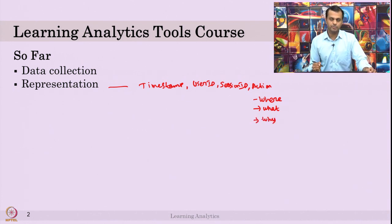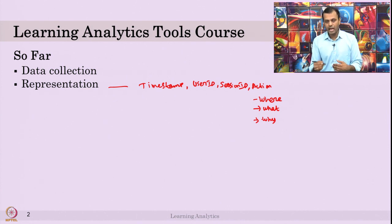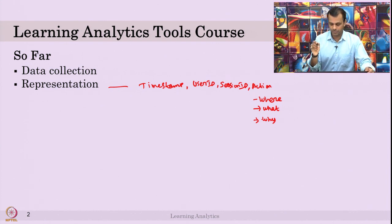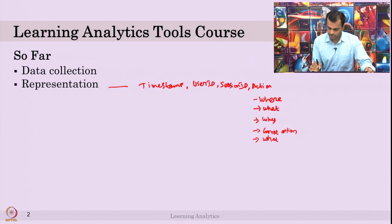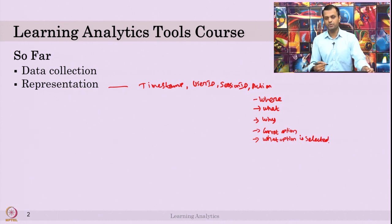Also, if they are answering questions in a quiz or online assignments, think about what option they selected and what was the correct option. So if the action is answering a question in MCQ, you need both the correct option and what option was selected. This is the action and the contextual information.